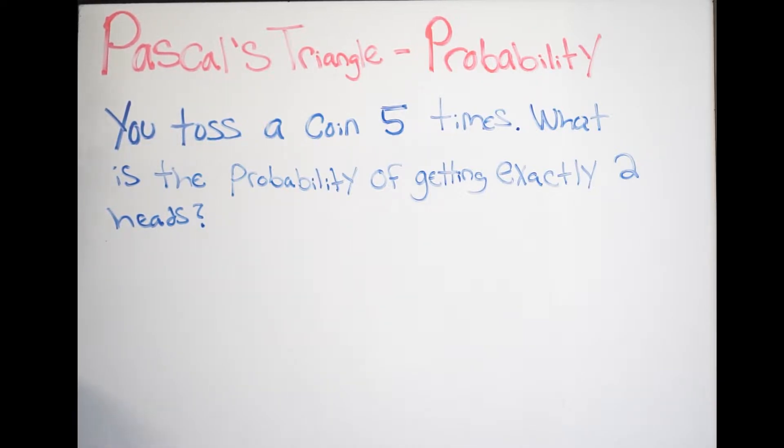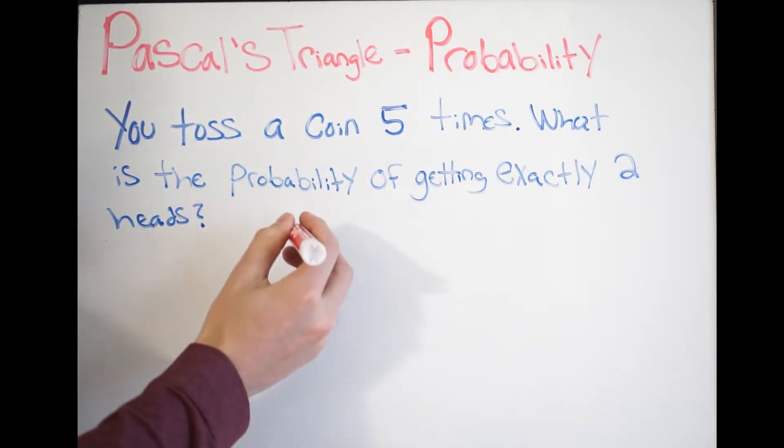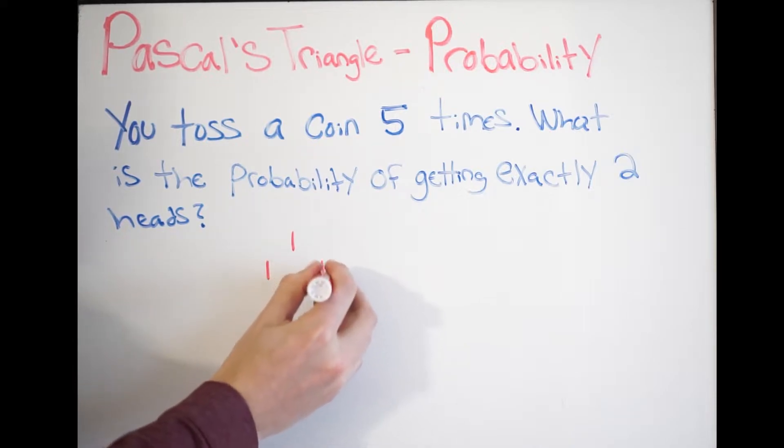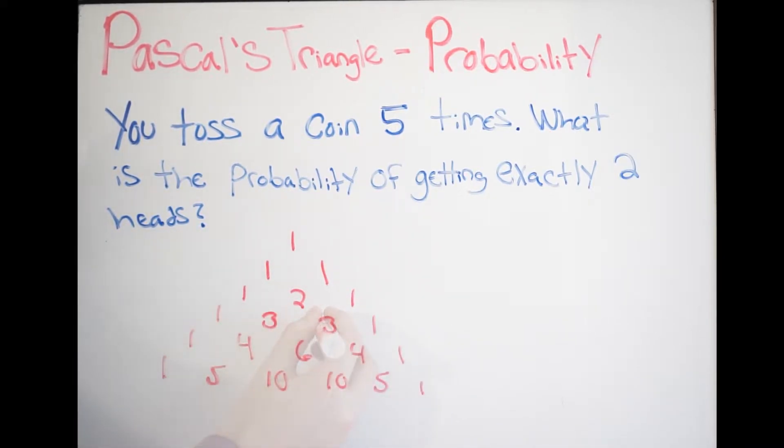So, for example, when I write out Pascal's triangle, it's going to look like this. Okay, and there we are. So, you can see that my diagonal has gone up to five, and this is the diagonal I'm talking about.